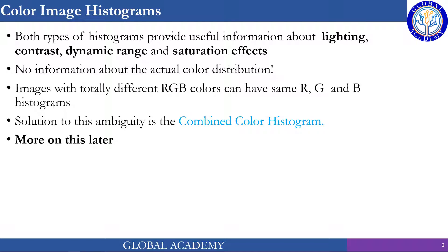Both types of histograms provide useful information about lighting, contrast, dynamic range, and saturation effects. But this RGB histogram is not about actual colors, because colors are generated using R, G, and B components together at the hardware level. Consider an 8-bit image where 8 bits are used to represent each channel — 8 bits for red, 8 for green, and 8 for blue. Then overall one color is generated using 24 bits, which gives 2 to the power of 24 possible colors — about 16 million colors. So it's not good practice to compute or display a histogram of 16 million colors. The solution is the combined color histogram, and we have a complete chapter about color image processing we will discuss later.